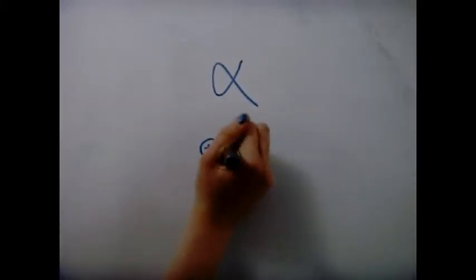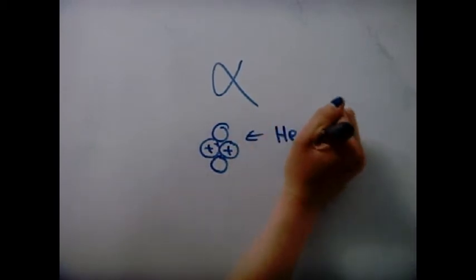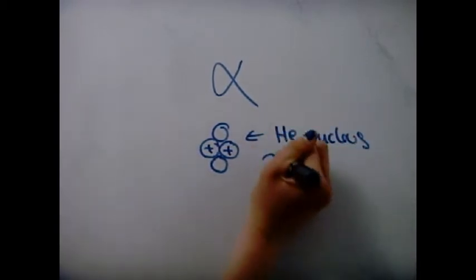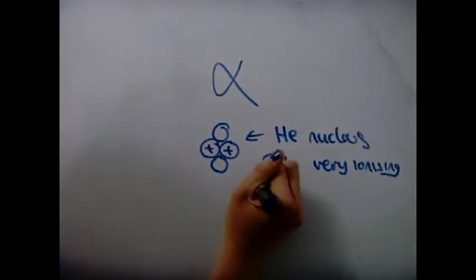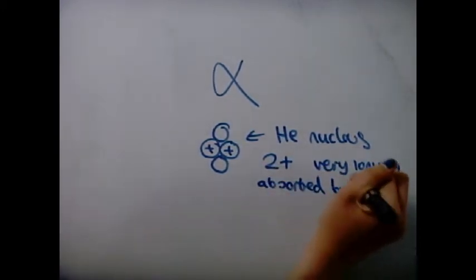Alpha Radiation. Alpha particles are helium nuclei. They have a 2 plus charge and are very ionising. However, they are not very penetrating and are absorbed by paper.